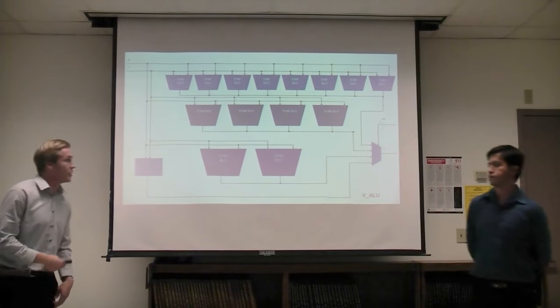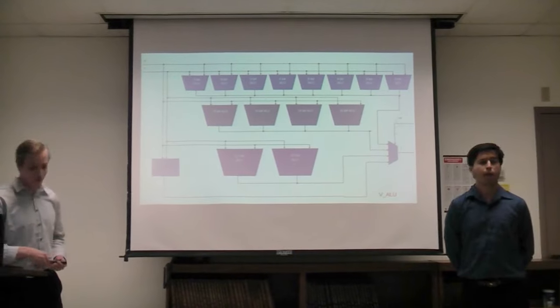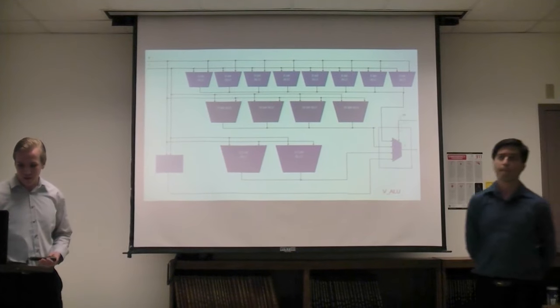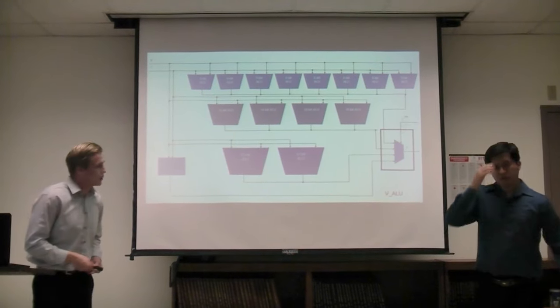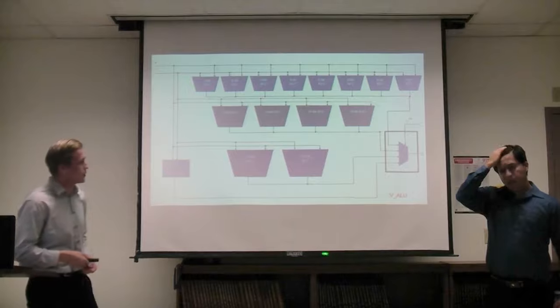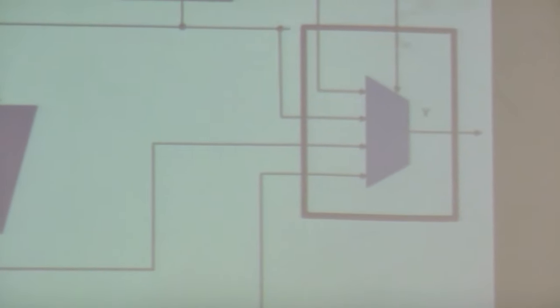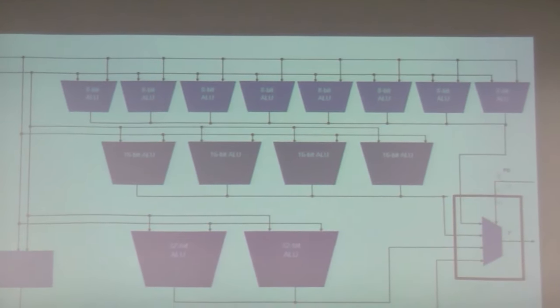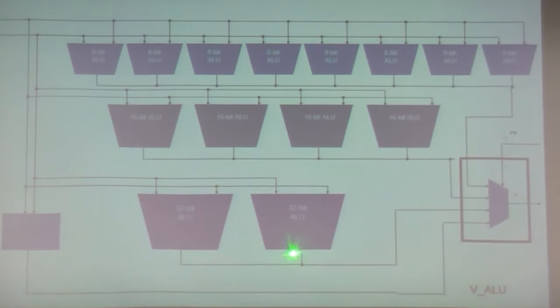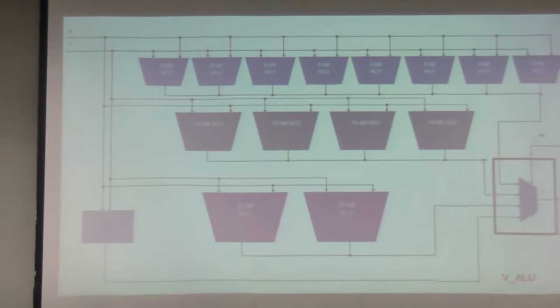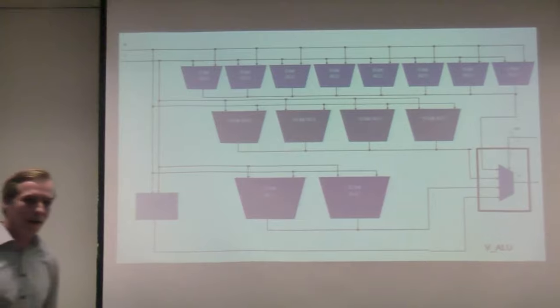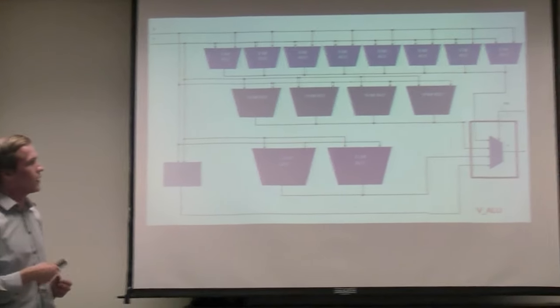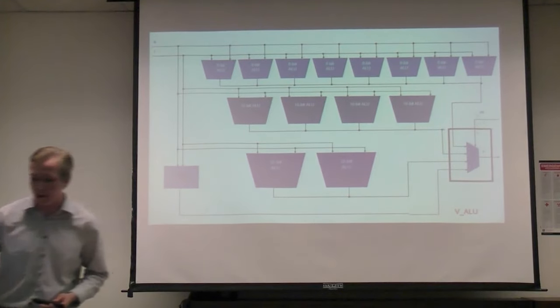Here's a peek inside our vector ALU. We have a function select that chooses the operation path: byte operations using 8-bit ALUs, half-word operations using 16-bit ALUs, and double-word operations using 32-bit ALUs. There's also a combinational logic cloud for our splat instruction — it's not contained within the 8-bit ALU for the byte operation.